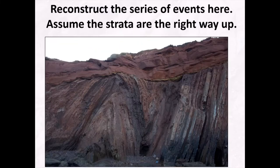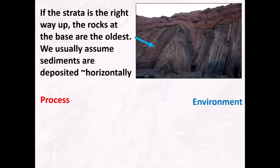Let's start with this example where we've got some folded rocks with an unconformity and some horizontally bedded rocks on top. If we take a minute to consider this picture and reconstruct the events in order that would give us this geology, we can assume that the strata are the right way up. Those red beds on top are still in the correct orientation from deposition. If this sequence hasn't been overturned, the rocks at the base are the oldest, because we assume sediments are deposited horizontally.